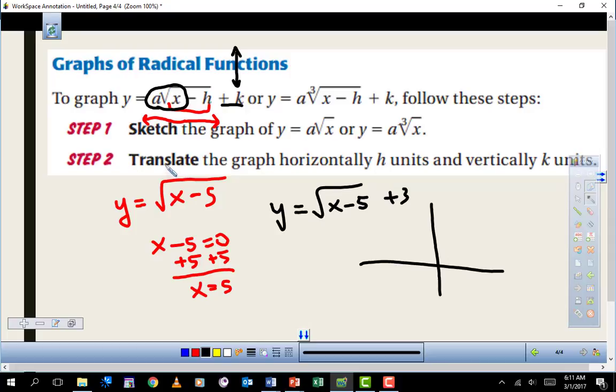First of all, as this advises you here, sketch the graph of the parent function. The parent function is going to include this a out in front. So if you had this function here, you'd graph this portion. After you graph the parent function, then you just apply these shifts. There's a horizontal shift and a vertical shift. So in this case, my parent function would be the square root of x.